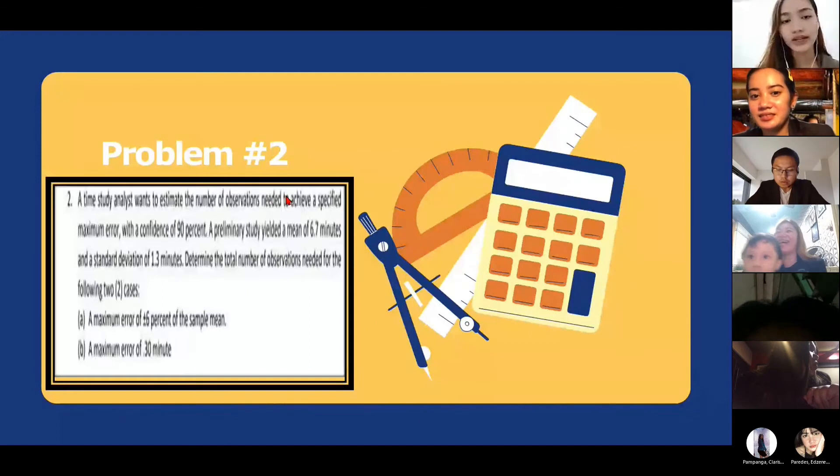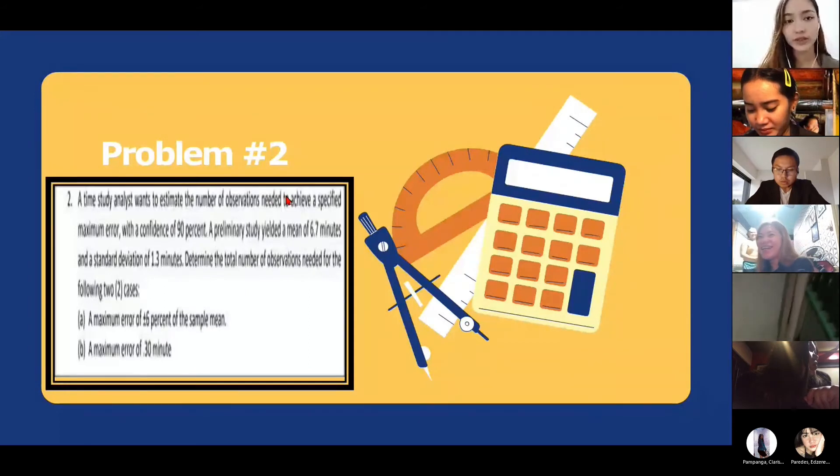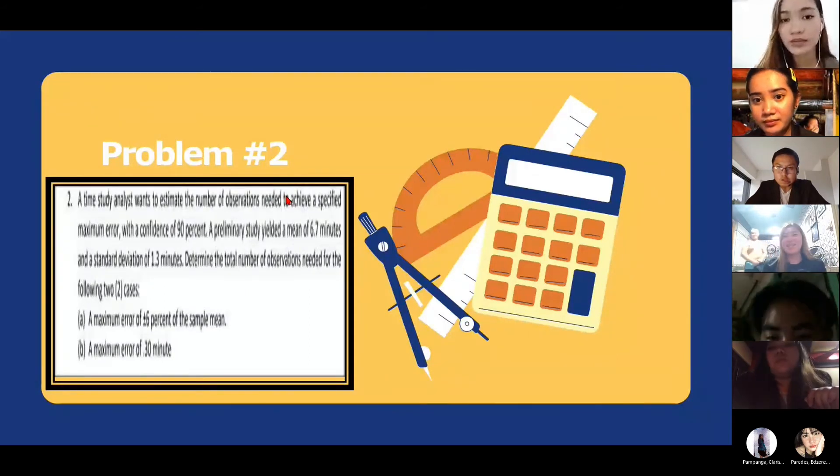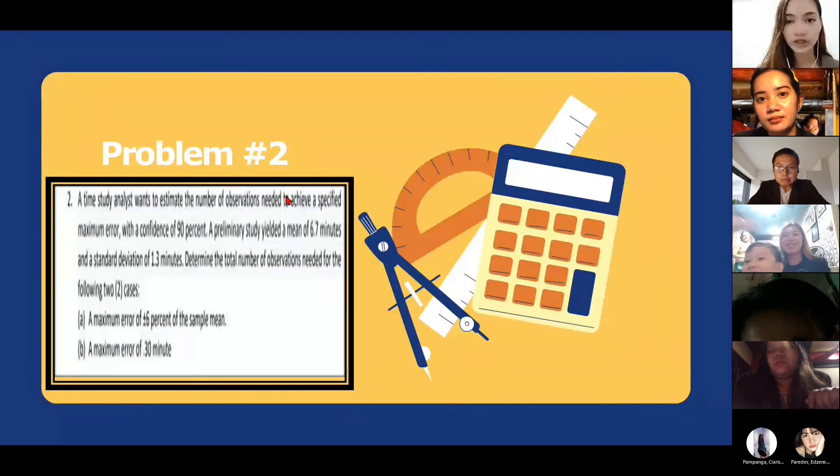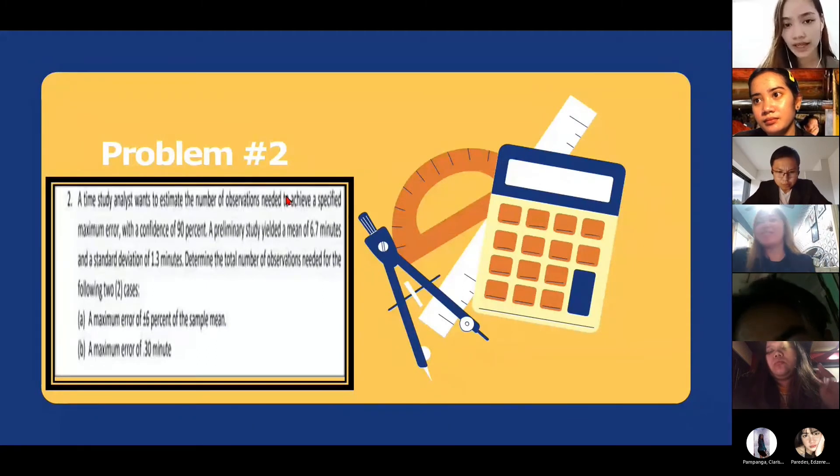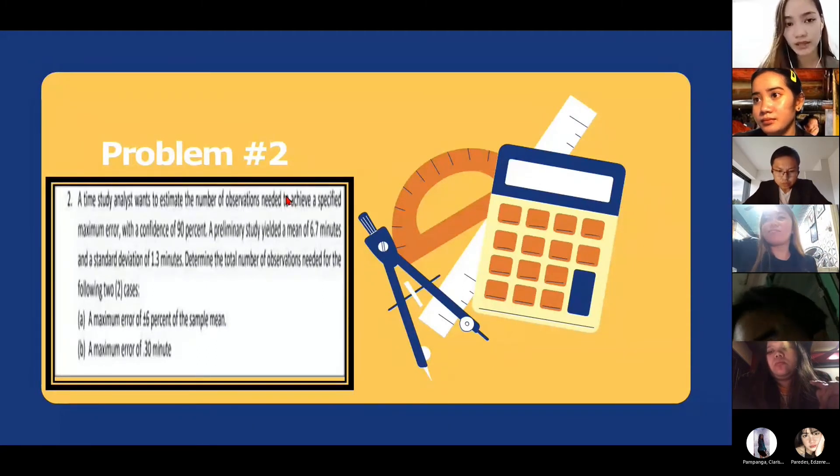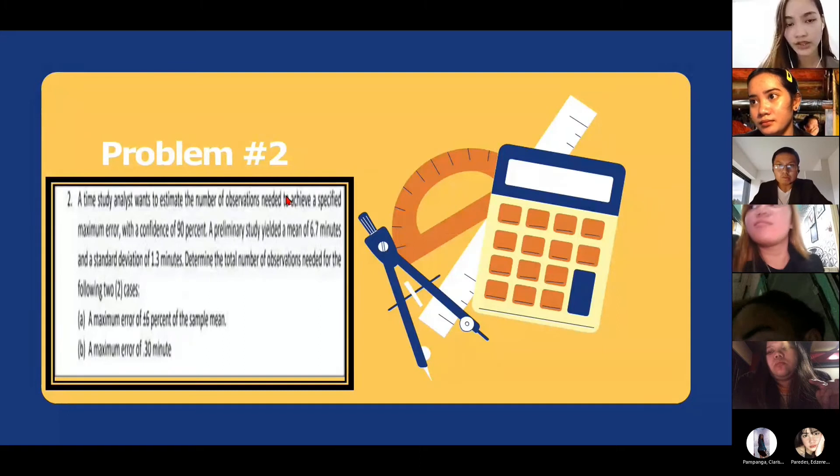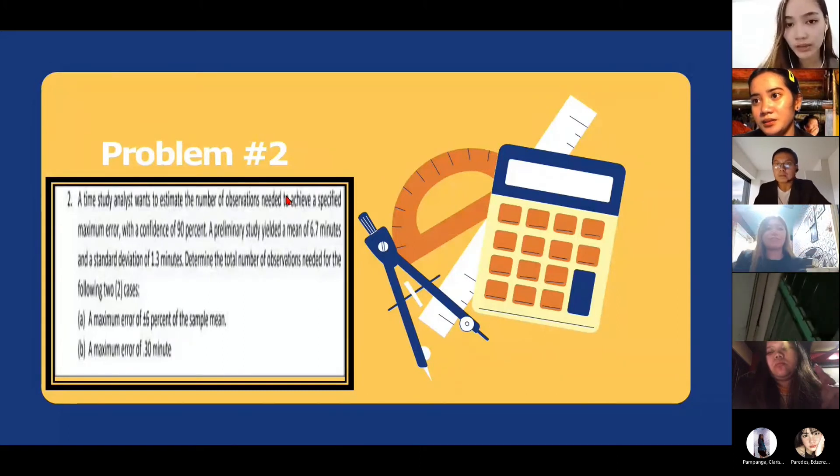Good day, everyone. I am Kim Jairo-Eugenio. So for question number two, a time study analyst wants to estimate the number of observations needed to achieve a specified maximum error. With a confidence of 90%, a preliminary study yielded a mean of 6.7 minutes and a standard deviation of 1.3 minutes.